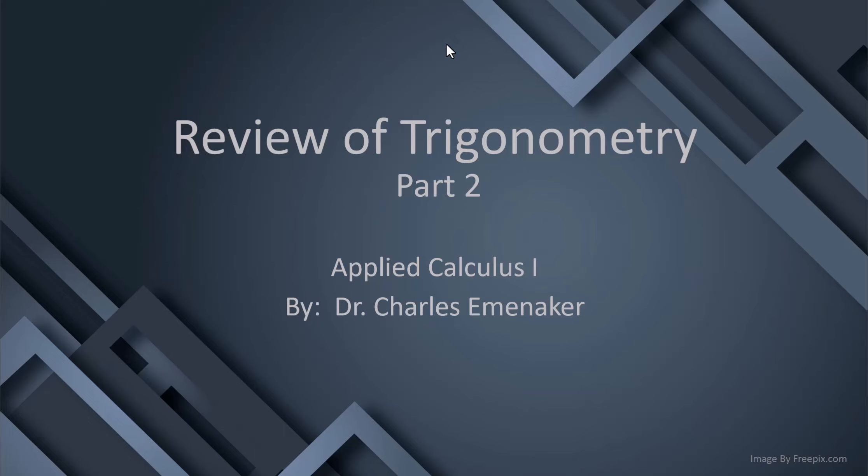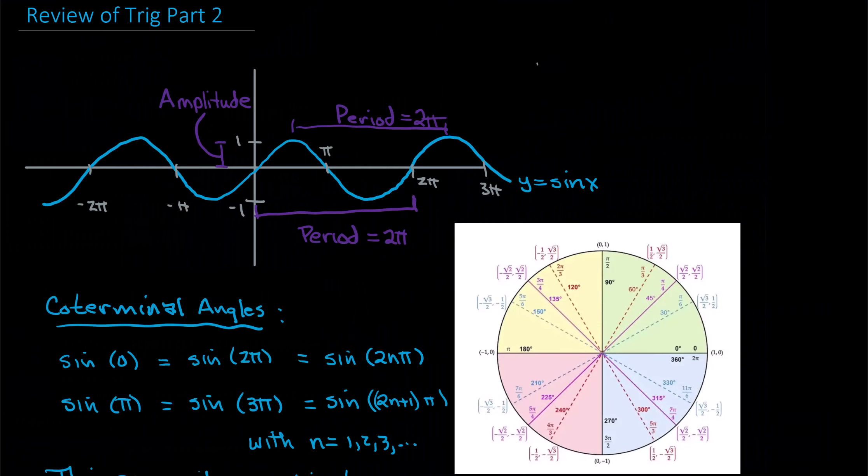Hi, this is Chuck. Welcome to the Review of Trigonometry, Part 2 for Applied Calculus 1. So in the first part of the Review of Trigonometry, we discussed sine, cosine, and tangent. I'd also mentioned that in the business world, there are legitimate needs for trig functions in modeling seasonally produced and sold items. What we're going to do here is continue looking at some background on trig, starting with a sine graph at the top of the page.